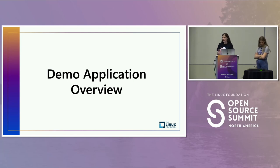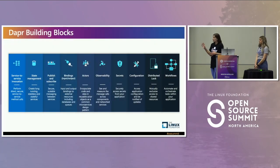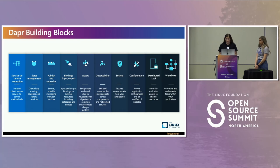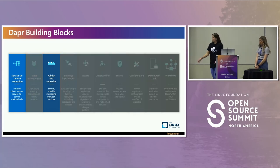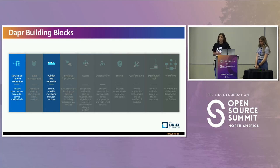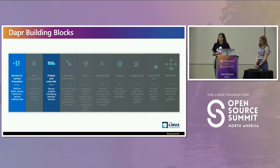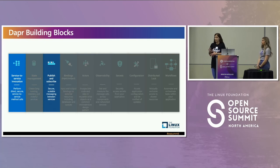With DAPR, there are 10 major building blocks, and for the demo we will be talking about two of them in particular. One is service to service invocation — the first part I will touch on and provide a demo on. Within DAPR, service to service invocation gives you direct and secure communication between your different services and you get a lot right out of the gate, such as observability, telemetry, tracing, and even resiliency — all things you'd have to think about if you weren't using something like DAPR.